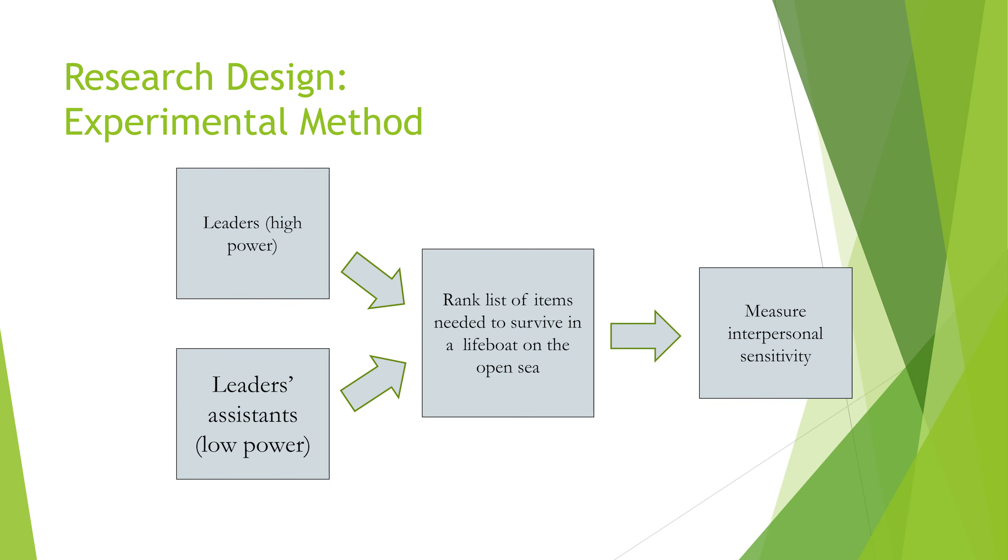Here we have an experiment where we're manipulating levels of power. We are assigning participants to be a leader, or we're assigning participants to be leader assistants. And then we ask them to rank a list of items needed to survive on a lifeboat. The assistant versus the leader, they have kind of a different mindset for how they rank these items. And after they've done that ranking, we measure their interpersonal sensitivity. This is called Ike's paradigm. The idea here is that those in high power are more likely to be interpersonally sensitive. We can see if being in a powerful position causes you to be more interpersonally sensitive.